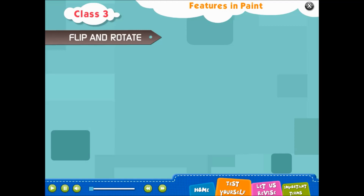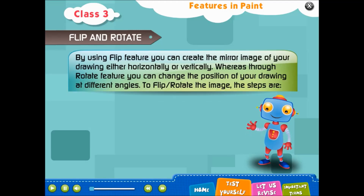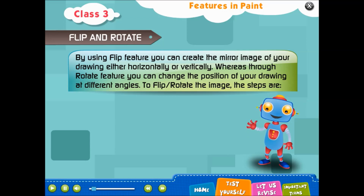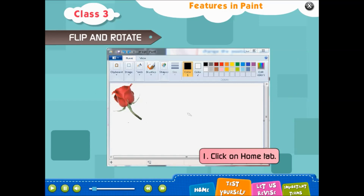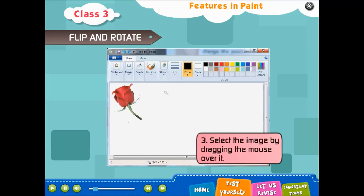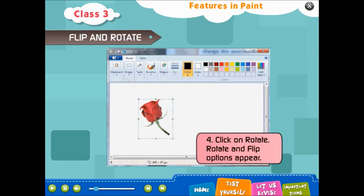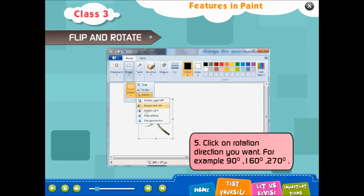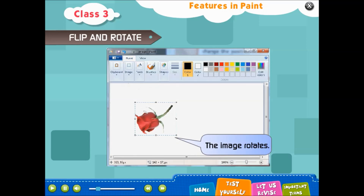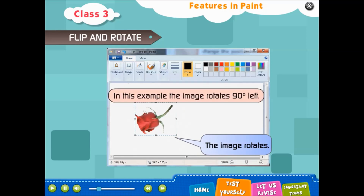Flip and Rotate: using the flip feature you can create the mirror image of your drawing either horizontally or vertically. Through the rotate feature you can change the position of your drawing at different angles. To flip or rotate the image: 1. Click on Home tab. 2. Click on Select. 3. Select the image by dragging the mouse over it. 4. Click on Rotate — Rotate and Flip options appear. 5. Click on the rotation direction you want, for example 90 degrees, 180 degrees, or 270 degrees. The image rotates accordingly.